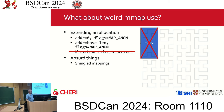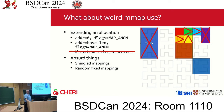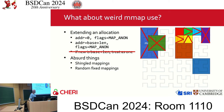For absurd things: you can't do shingled mappings or things that span part of an allocation and part not. You also can't do absurd random fixed mappings that stomp over existing reservations — though for compatibility with old code we allow fixed mappings so long as no one's there. Some things are outside the rules.